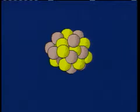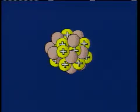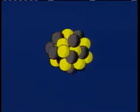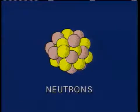During the 1930s, scientists realized that the nucleus consisted of positively charged particles called protons and neutral particles called neutrons. It was the number of protons that determined the identity of the atom.